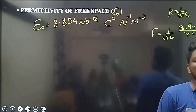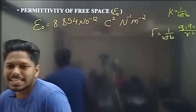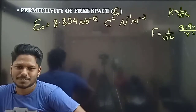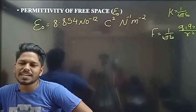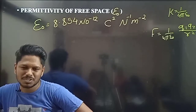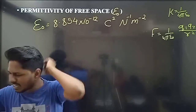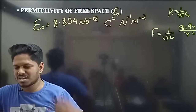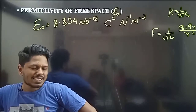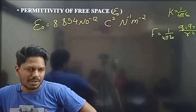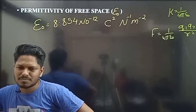What is permittivity? The value is 8.854 × 10 power minus 12. You can tell the value. If you are in the exam, I will tell you the value — at least know what it represents.